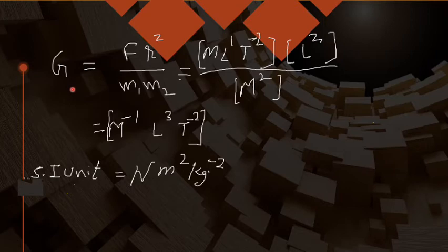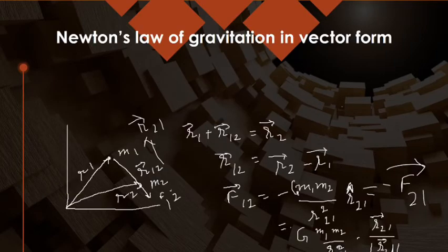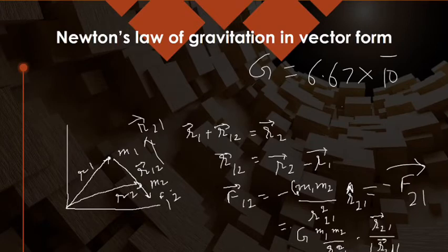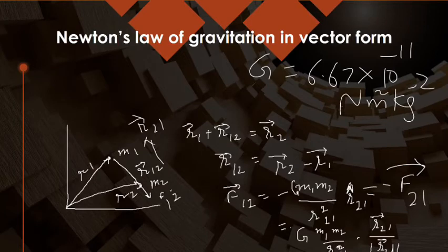The gravitational constant was found experimentally by Cavendish. He performed a number of experiments and found the value of G = 6.67 × 10⁻¹¹ N·m²/kg². He also found that this value of G does not change even when physical conditions are changed. This is the value of capital G you can use directly in numericals.